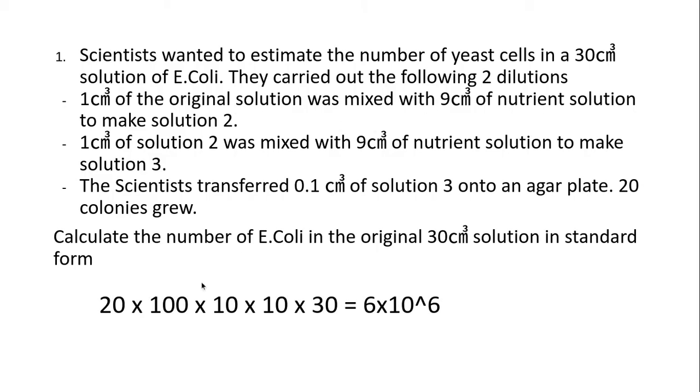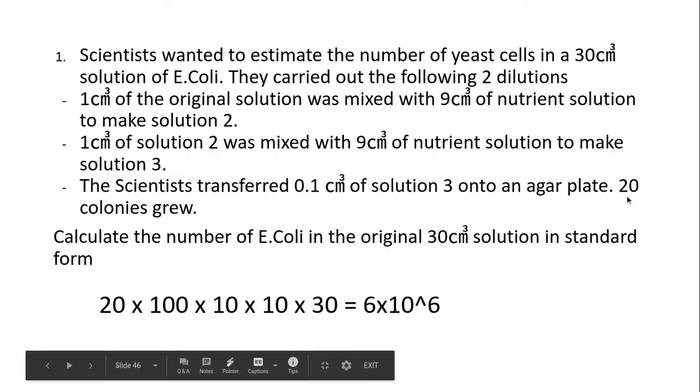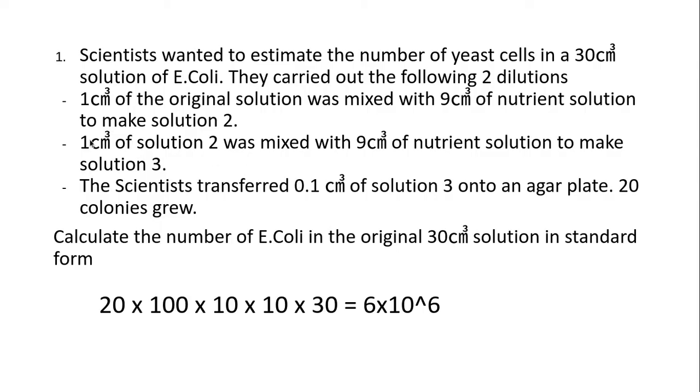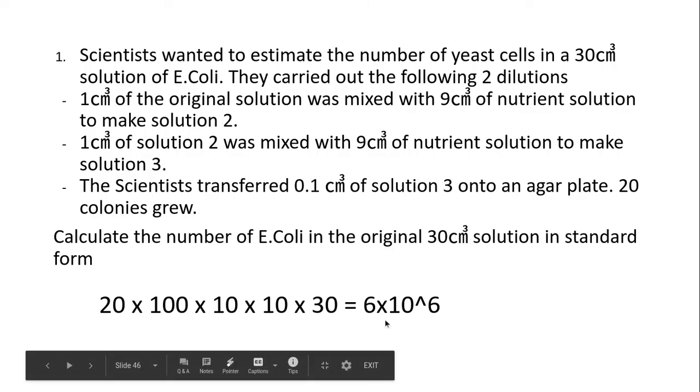When calculating this, I'd be doing 20 because I've got 20 colonies here, times 100 because that's the dilution factor, times 10 here, times 10 there. Then I'm also going to times it by 30 because it was taken from 30 centimeters cubed, so I should have 6 times 10 to the power of 6.